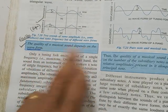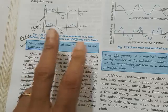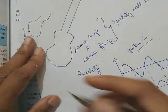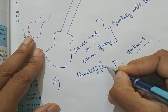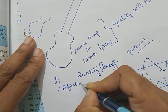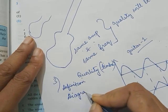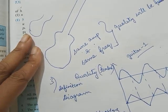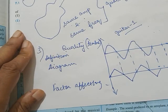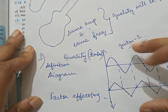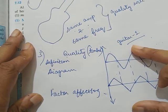Quality, also called timbre, depends on the waveform. Quality or timbre of a sound is that characteristic which distinguishes two sounds of same loudness and same pitch but emitted by two different instruments - even identical instruments - because of the change in their waveform. So factor affecting: the quality of a musical sound depends on the waveform. Rest all you can cut off. If you can do this along with me as you watch the video, that would be better - just finish off the work.